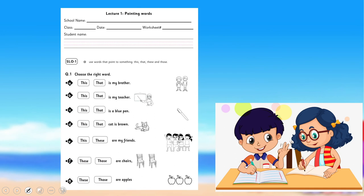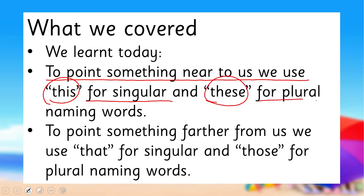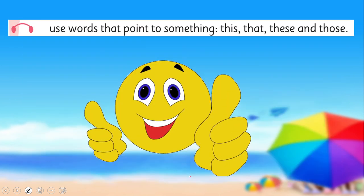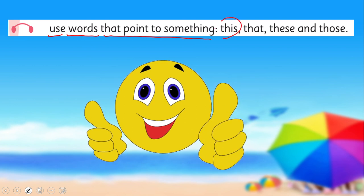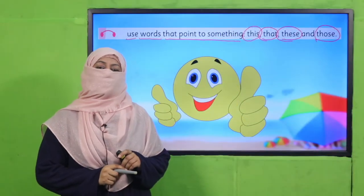Here is a worksheet — my dear fellow teachers, the worksheet, lesson plan, and PowerPoint presentation links are given; please click, download, and provide a printed worksheet to students for practice. My dear children, you will look at the picture and complete the sentence by using the correct pointing word. What we learned today: to point to something near, we use 'this' for singular and 'these' for plural naming words; to point to something farther, we use 'that' for singular and 'those' for plural. In this way we achieved today's SLO: use words that point to something — this, that, these, and those.